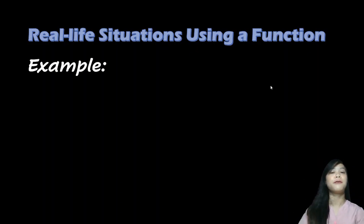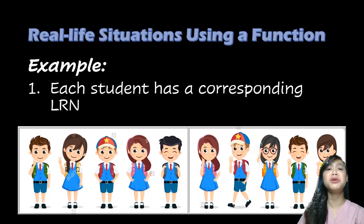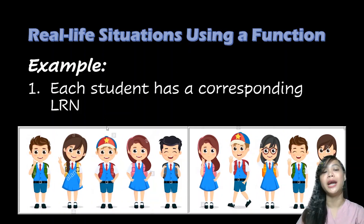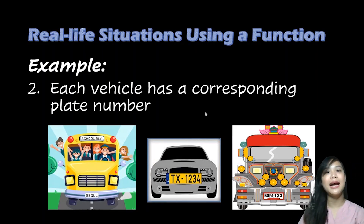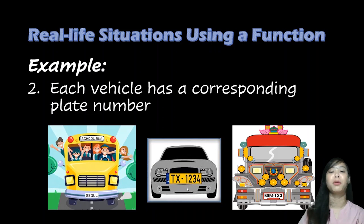Now let's look at real-life situations using a function. First example: each student has a corresponding LRN or Learner's Reference Number. Each student has a unique LRN, so this is a function. Another example: each vehicle — whether a bus, a taxi, a private vehicle, or a jeepney — has a specific unique plate number registered with the LTO. That is also a function.